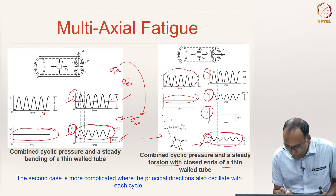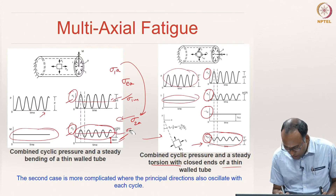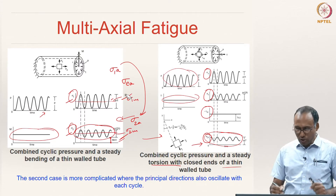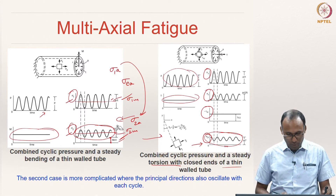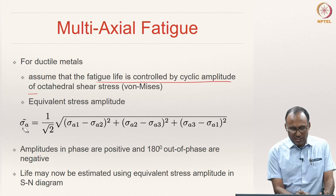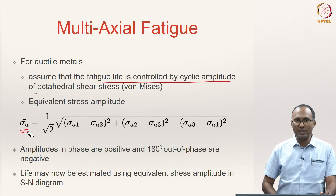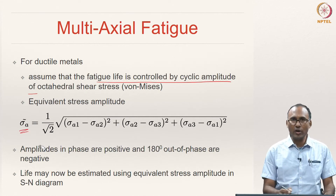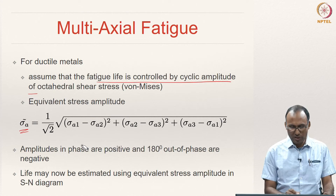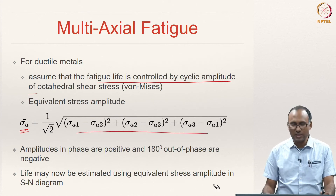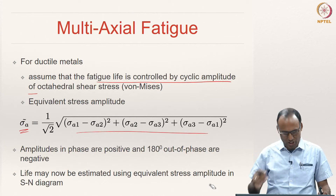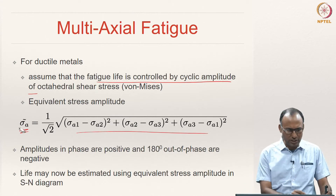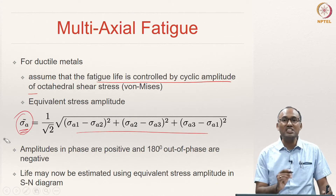Similarly, you have the mean stress sigma 1m and sigma 2m, from which you calculate the equivalent mean stress. The equivalent stress amplitude is calculated using the von Mises stress or equivalent stress formula already discussed in previous modules on distortion energy theory. The same formula is used to calculate the equivalent stress amplitude — a scalar quantity as if it is a one-dimensional situation.